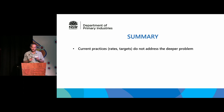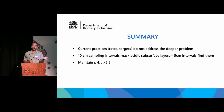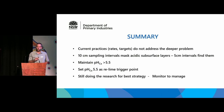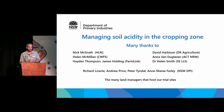In summary: current practices are not addressing the deeper problem. Ten centimetre sampling doesn't identify where acid layers are - five centimetre sampling does. If we want to address subsurface acidity, we've got to get our pH above 5.5 to allow alkali to move down to where it's needed. We should be setting our re-liming trigger at 5.5 - not waiting for a production loss before applying lime. Soil testing and monitoring pH is a key part of understanding what your management is doing. We need a soil test to manage the soil properly.